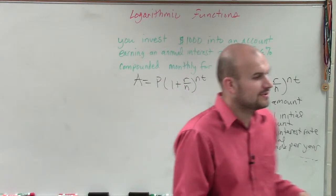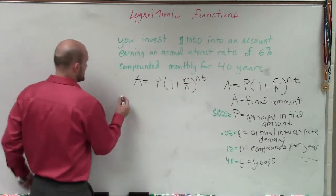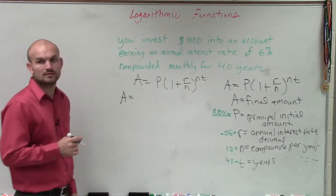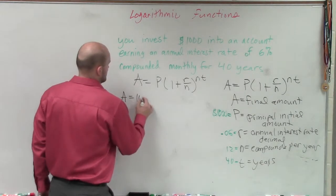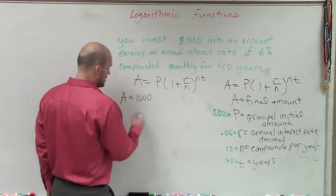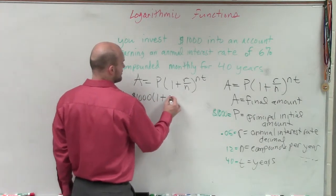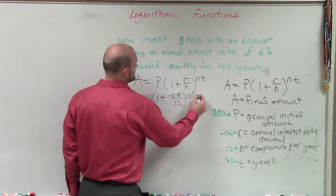So therefore, ladies and gentlemen, now we have everything we need. We just need to plug it into our formula. So we say A equals $1,000 times 1 plus 0.06 divided by 12, raised to 12 times 40.